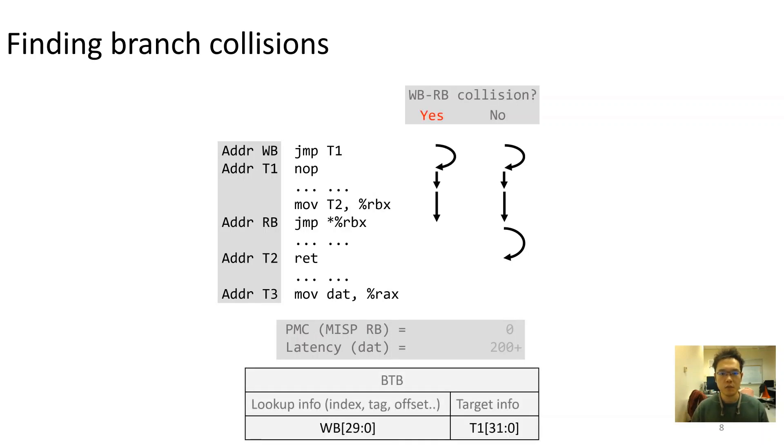In a collision case, the first step remains the same with executing the same branch at the beginning. As usual, this will create an entry in BTB by storing a few bits from the branch's source address WB and a few target bits of T1. Branch collision here means the next indirect branch at address RB having matching lookup information with the previous branch at WB.